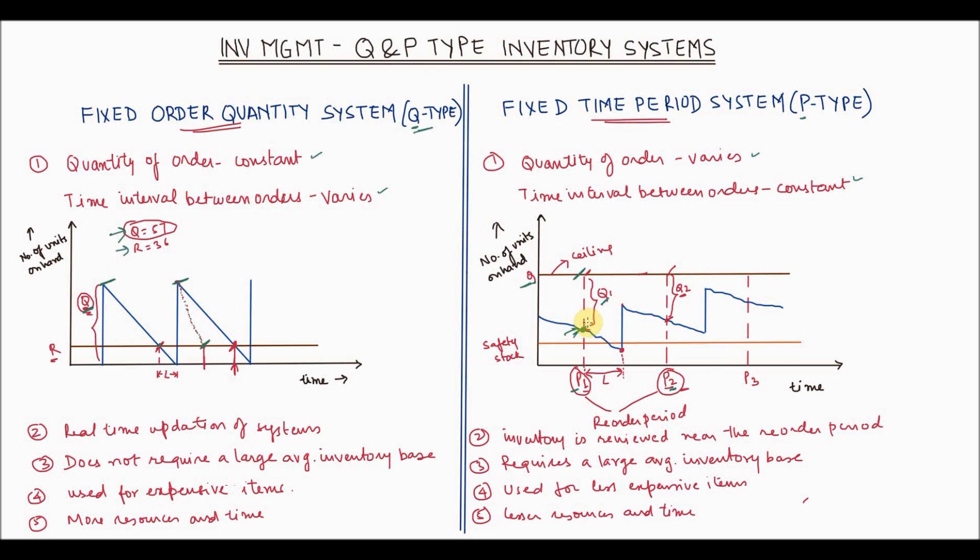Once the order has been placed, there is going to be time which is the lead time L to get the items into your inventory. In the meantime, the inventory will keep on depleting and it may hit below your safety stock. And then again when you receive the quantity Q1, your inventory levels will go up and then again it will keep on coming down.